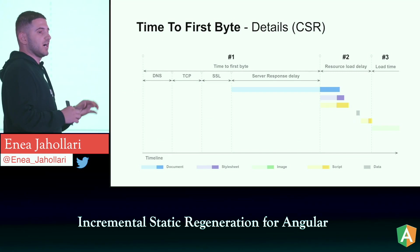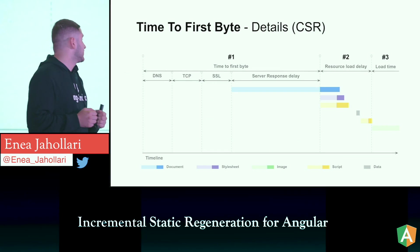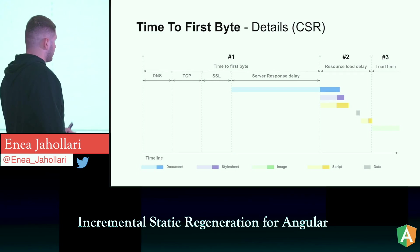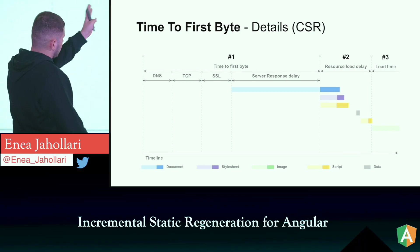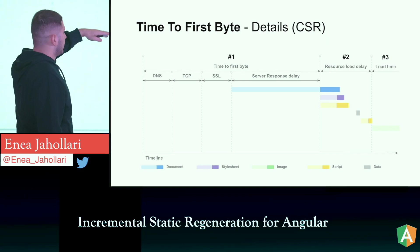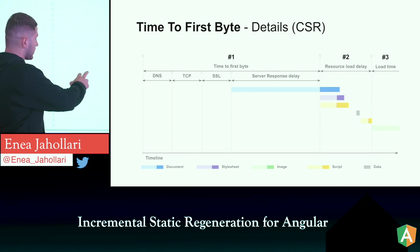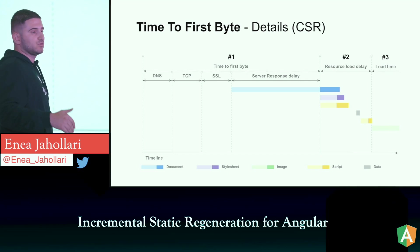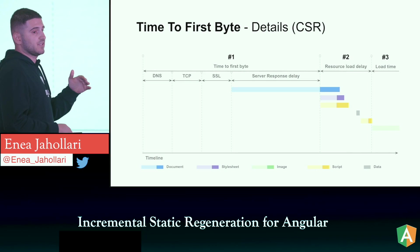Here's an animated version. For client-side rendering, the first column is time-to-first-byte, the second is resource load delay, the third is remaining load time. We see the document (blue), then stylesheets, then scripts, then a gray box for API calls, then potentially lazy-loaded routes and more scripting, and finally the load time.